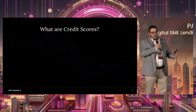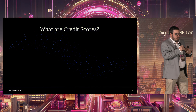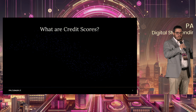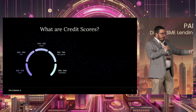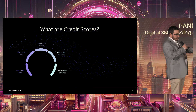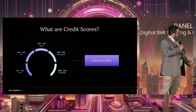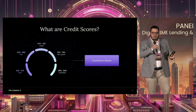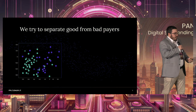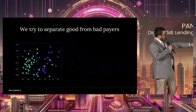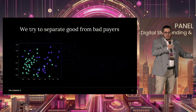So what are credit scores? This is something we are all familiar with — we have better and worse credit scores. But what is behind them? There are a lot of models, a lot of rules, sometimes more or less sophisticated. At the end of the day, these are classification models trying to separate good payers from bad payers.